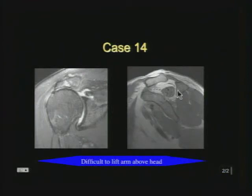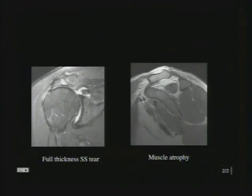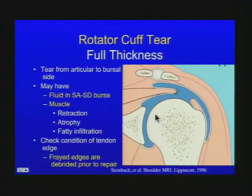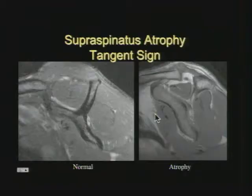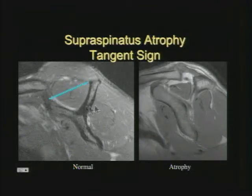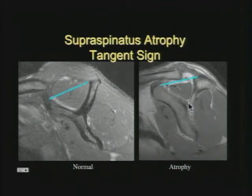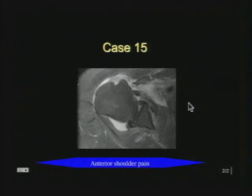Regarding the rotator cuff: a high-riding humerus usually means a rotator cuff tear. To look at the muscles, use your sagittal images and draw a tangent line through the top of the Y. Usually the supraspinatus muscle goes above that line — the tangent sign. If it's below, the muscle is definitely atrophic. Also look for fatty infiltration — those findings are very important.